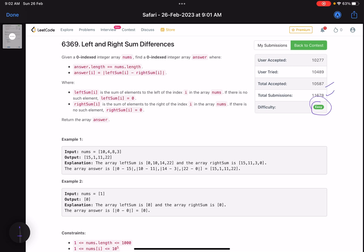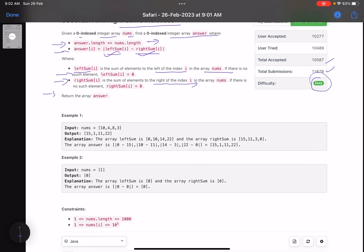So the problem name is left and right sum differences. Given a zero indexed integer array nums, find a zero indexed integer array answer where answer.length equals nums.length, and answer[i] equals to the absolute value of leftSum[i] minus rightSum[i]. What are the values of left sum and right sum? leftSum[i] is the sum of elements to the left of the index i in the array nums. If there is no such element, leftSum will be zero. Similarly, rightSum is the sum of elements to the right of index i in the array. If there is no such element, rightSum is zero. Now just see, the ith element is not included in the left sum and the right sum. That's a point to notice here and return the answer array.